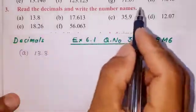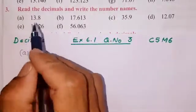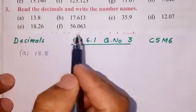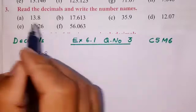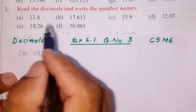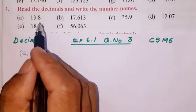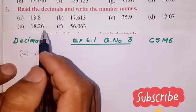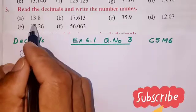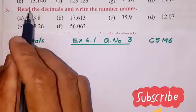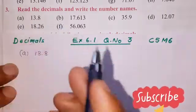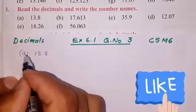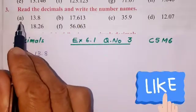Hello my dear friends and students, welcome to my SR Tutorial channel. We are going to learn Exercise 6.1, Question number 3: read the decimal and write number names. A decimal number is written in word form. We have question number A.